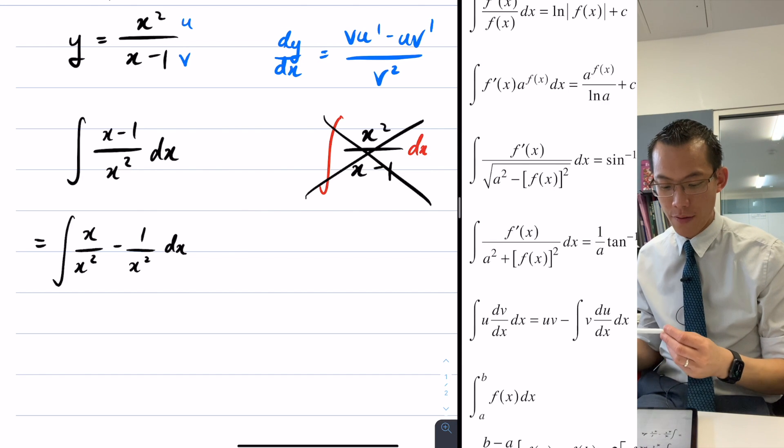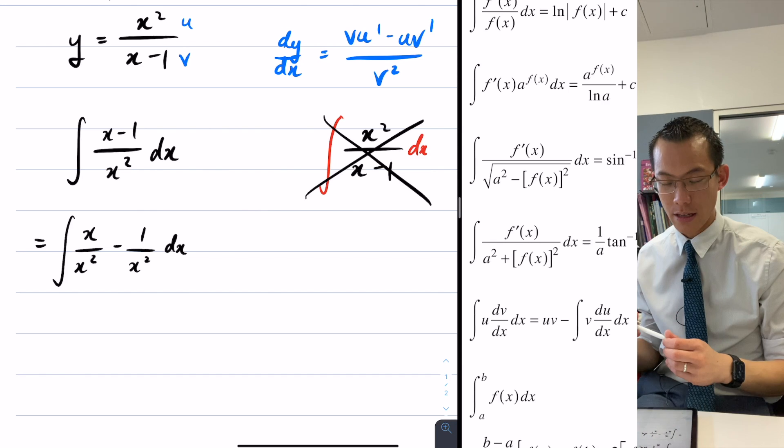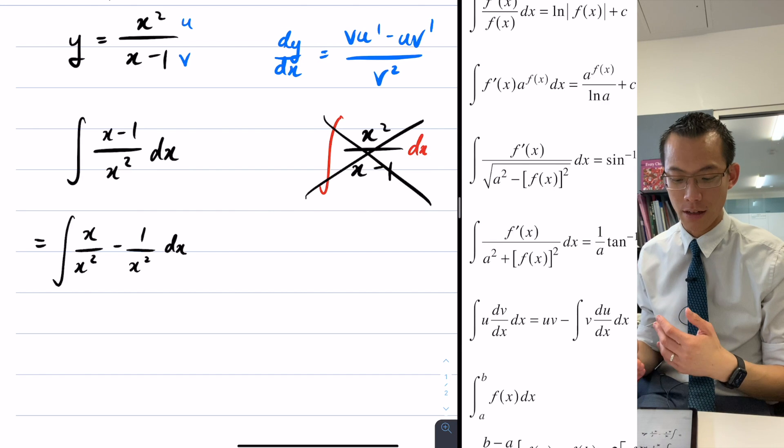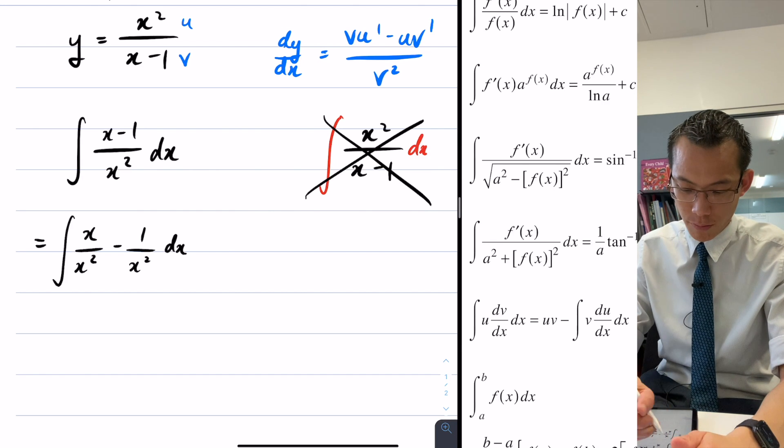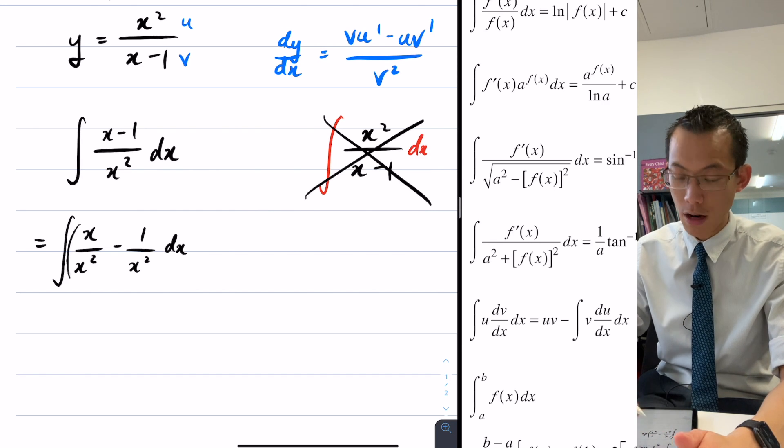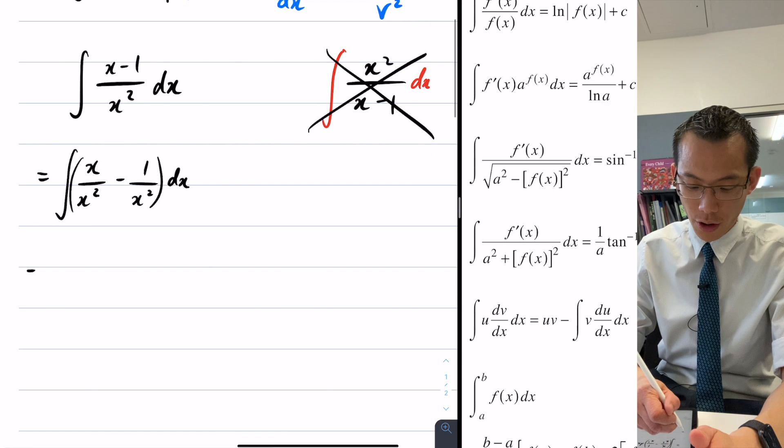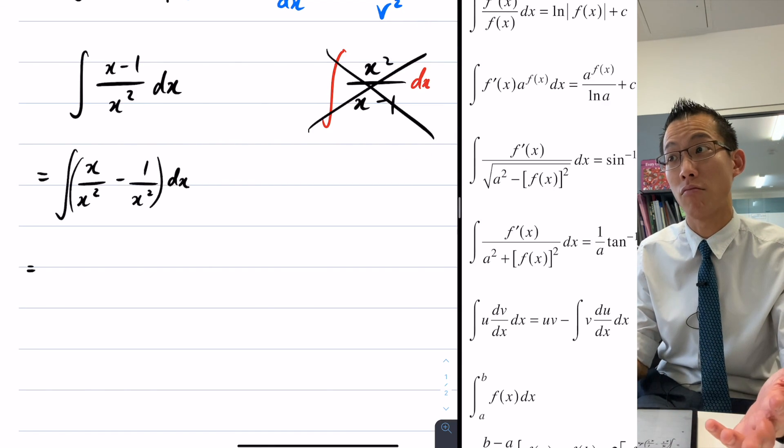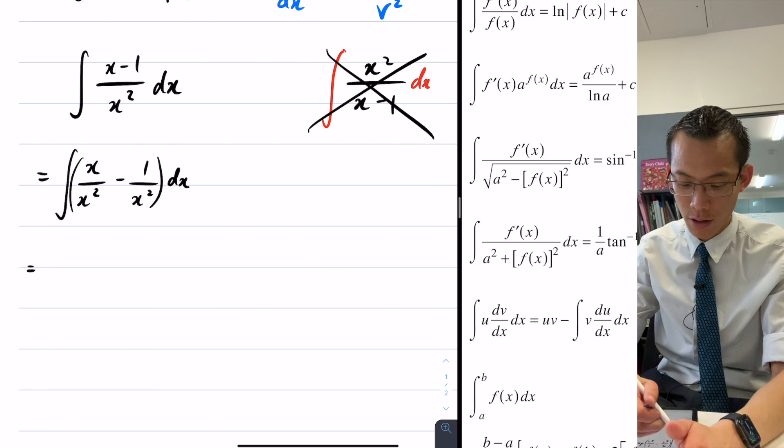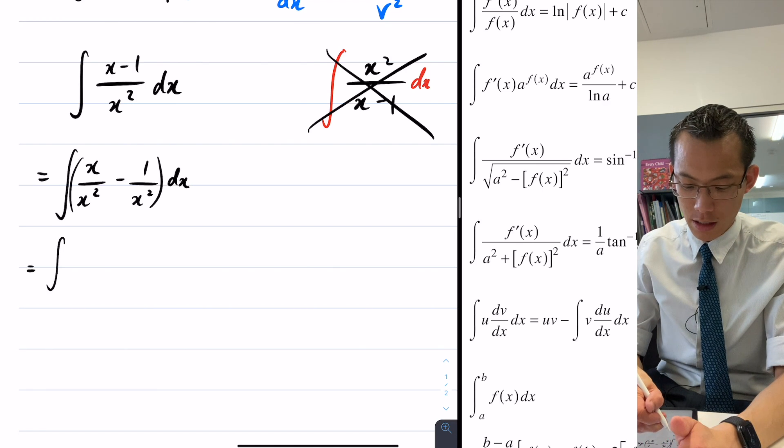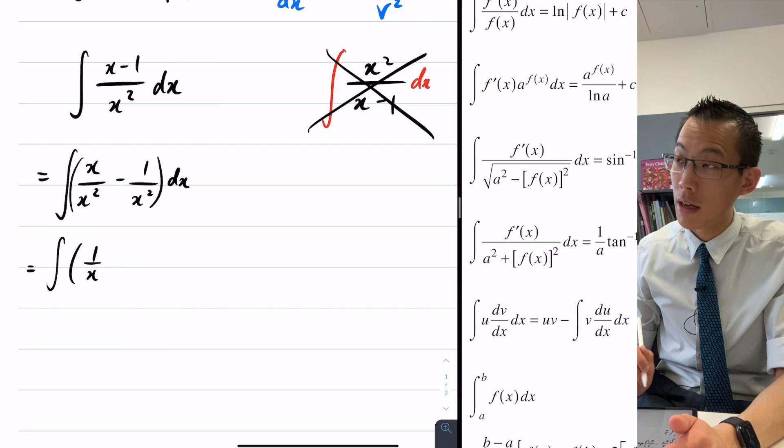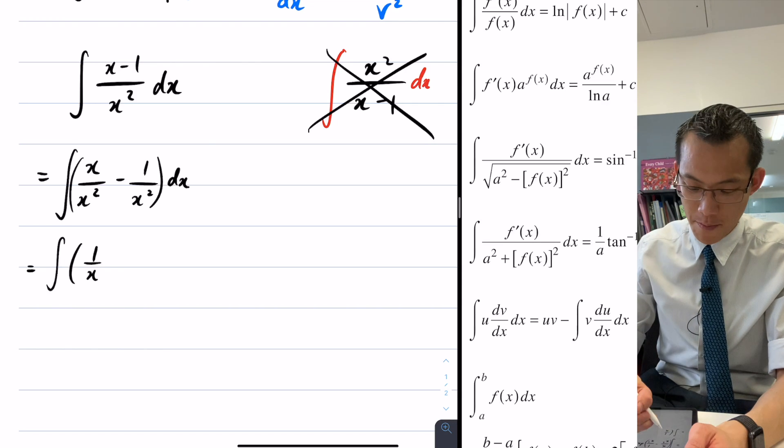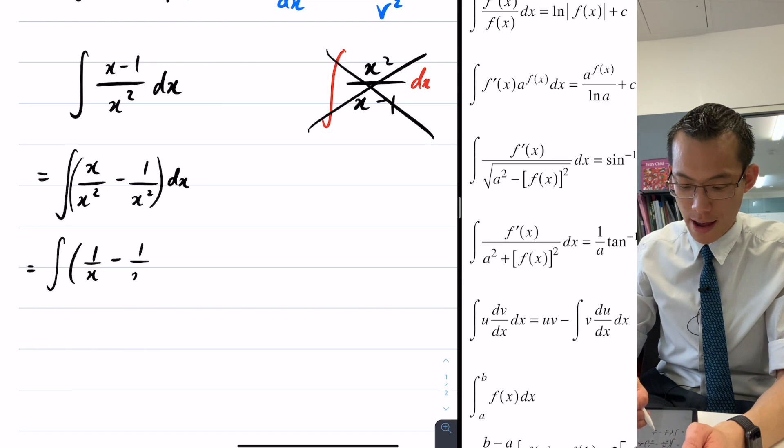Now the derivative of x squared is 2x so I would need 2x on the top, but in fact in this case you can probably see, if I pop some brackets around here, you can even go one better than that because x over x squared you can just do some cancelling. So in fact this really is 1 over x minus 1 over x squared.